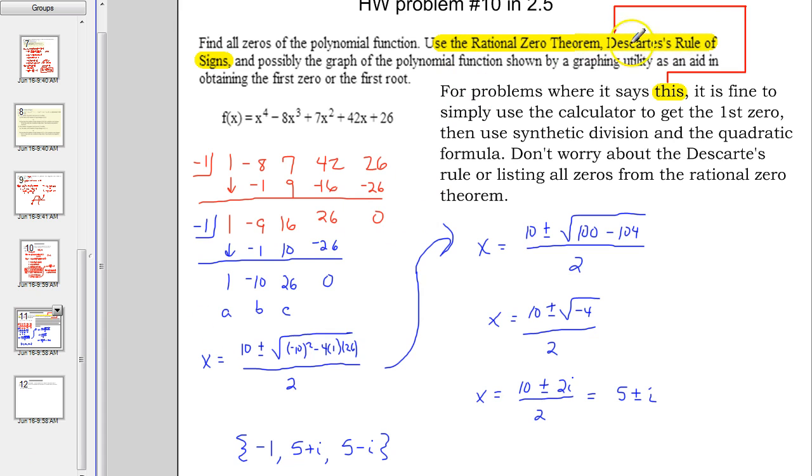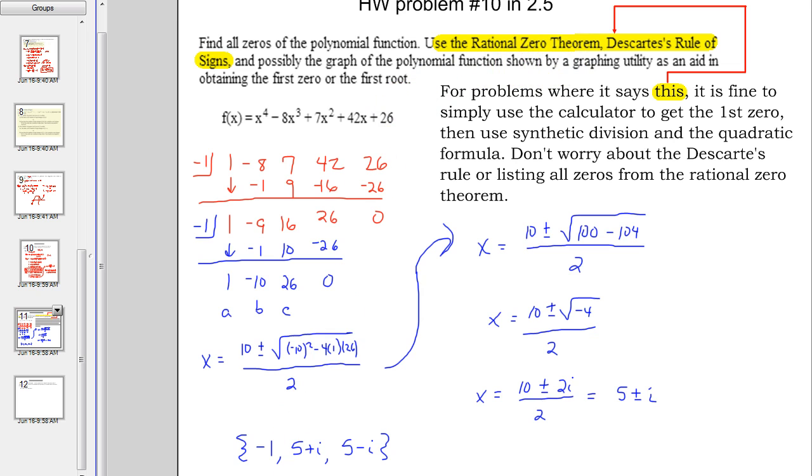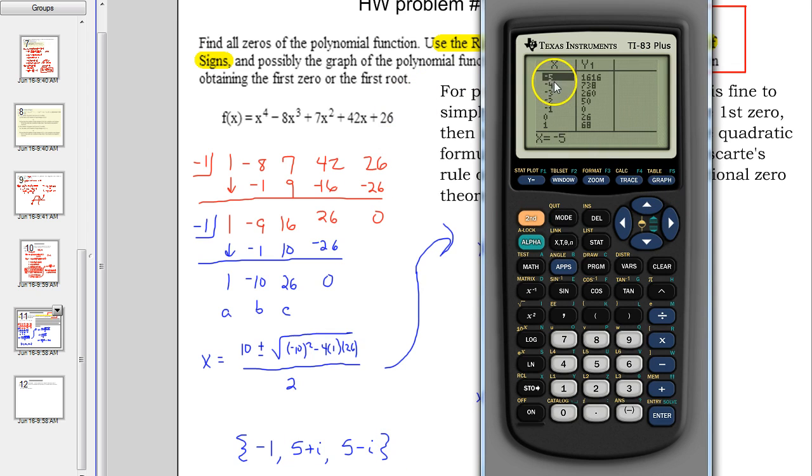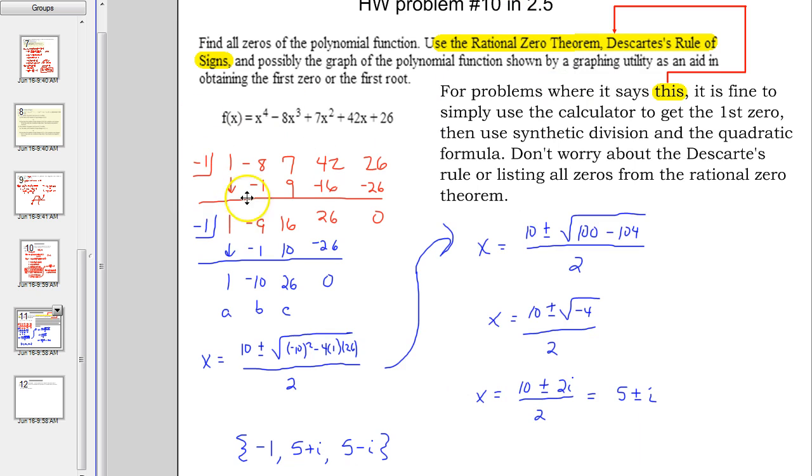So again, if you see this instruction, if you click view an example, it's going to walk you through using that instruction. Instead of that, use your calculator, get that first zero from the table. There's negative 1 gives me zero. Use the graph. Again, we see the even multiplicity of that root at negative 1. It means I can use it twice and then synthetic division until you get down to a quadratic. And then quadratic formula for your final two zeros. Or possibly factor it if it's factorable. This one wasn't. But sometimes it will be.